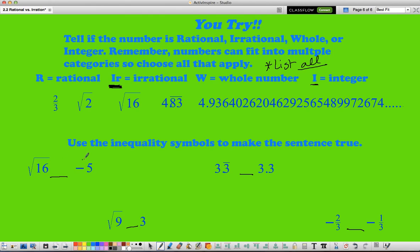Then what you're going to do is you're going to list the inequality symbol that makes this sentence true. So the square root of 16 and negative 5. Remember your inequality symbols, less than, greater than, less than or equal to, greater than or equal to, or equals. As always, if you have any questions, make sure to write them down or email me. Make sure you take your time with this, and we can always go over it in class.